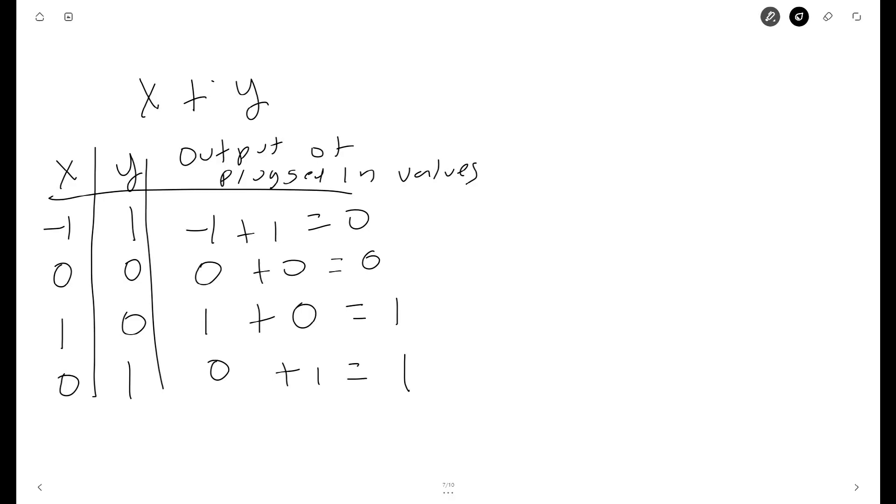The following multiple variable expression that I created is x plus y. We have for the x and y values negative 1 and 1, then 0 and 0, 1 and 0, 0 and 1. The outputs when plugging in the x and y values are negative 1 plus 1 equals 0, 0 plus 0 equals 0, 1 plus 0 equals 1, and 0 plus 1 equals 1.